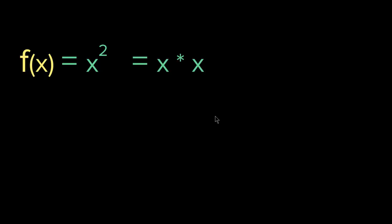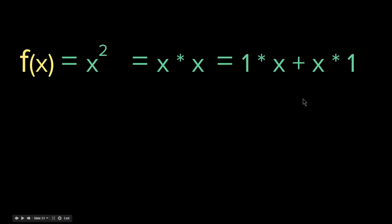Well, x squared is x times x. So we have f(x) = x and g(x) = x. We know that f′(x) = 1 and g′(x) = 1. Applying the product rule: the first function times the derivative of the second is x times 1, plus the second function times the derivative of the first, which is x times 1. So it is x + x, which gives us 2x. We get the same result as the power rule — both give 2x.